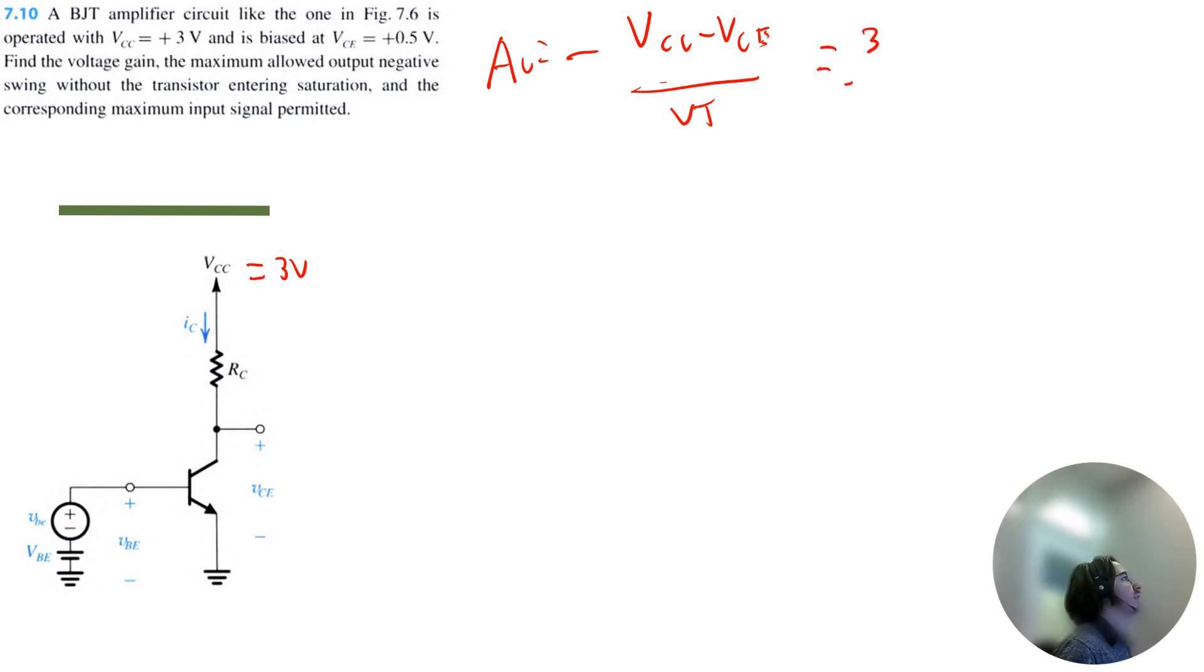So that's equal to negative 3 volts minus 0.5 volts divided by the thermal voltage, which is 0.025 volts. So it's basically 2.5 divided by 0.025, so that's negative 100 volts per volt.